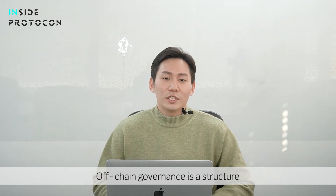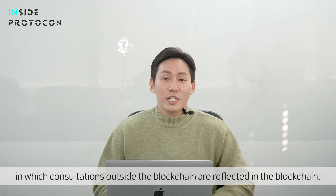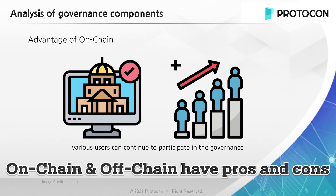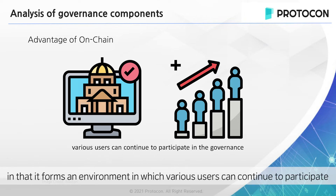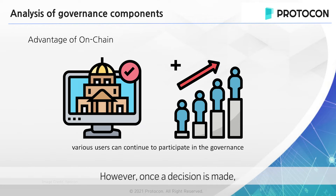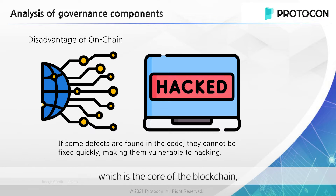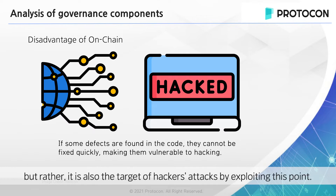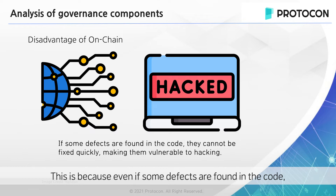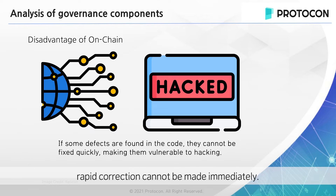Off-chain governance is a structure in which consultations outside the blockchain are reflected in the blockchain. On-chain governance has the advantage of increasing community cooperation in that it forms an environment in which various users can continue to participate in the governance process. However, once the decision is made, it is difficult to change it afterwards. This is reasonable in that once reflected in the network based on the irreversibility, which is the core of the blockchain, it cannot be easily modified. But this also makes it a target of hacker attacks, because even if some defects are found in the code, rapid correction cannot be made immediately.